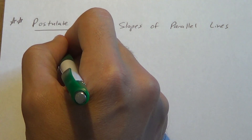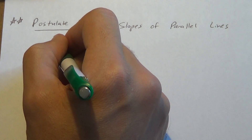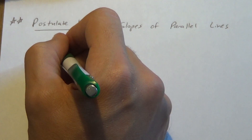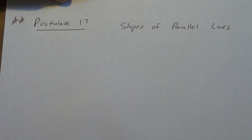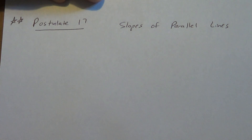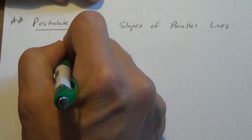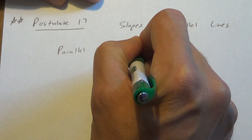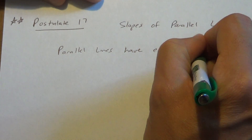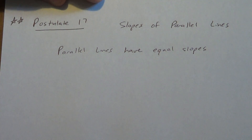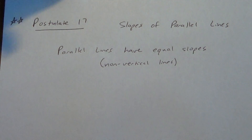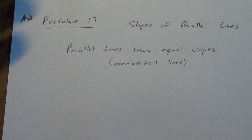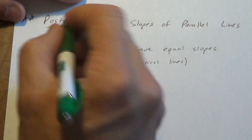Slopes of parallel lines: in a coordinate plane, two non-vertical lines are parallel if and only if they have the same slope. That phrase 'if and only if' means it works both ways — if they have the same slope they are parallel, and if they are parallel they have the same slope. Parallel lines have equal slopes.